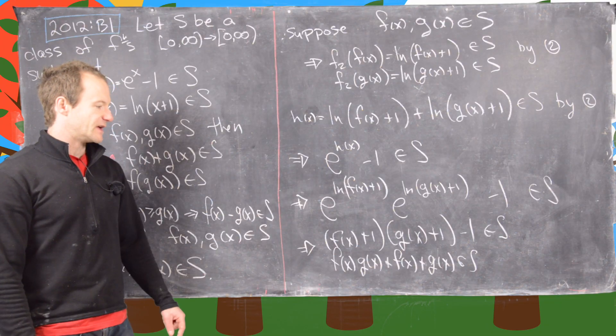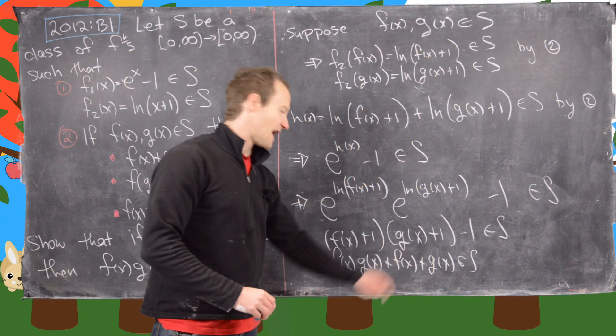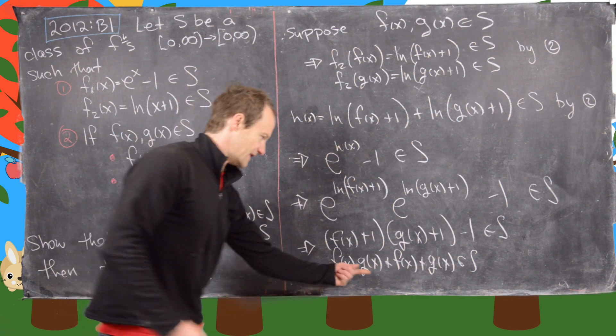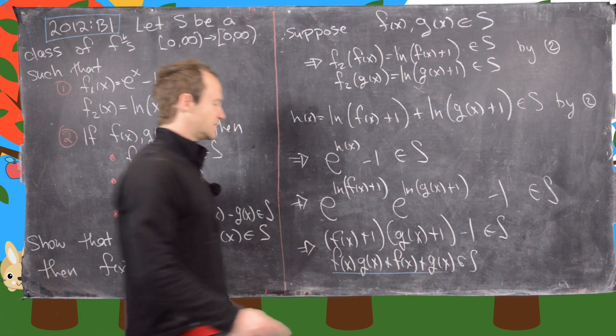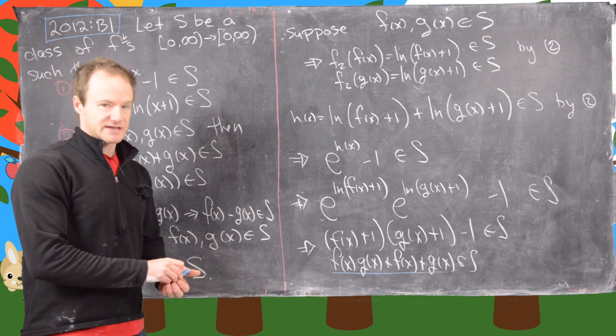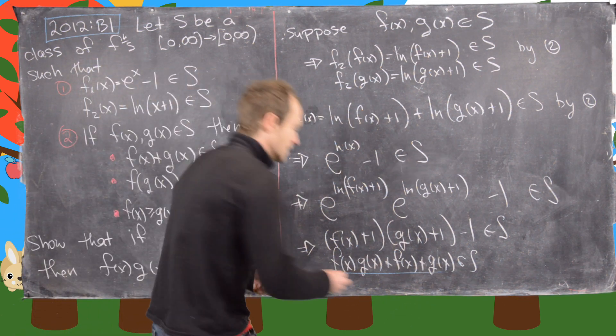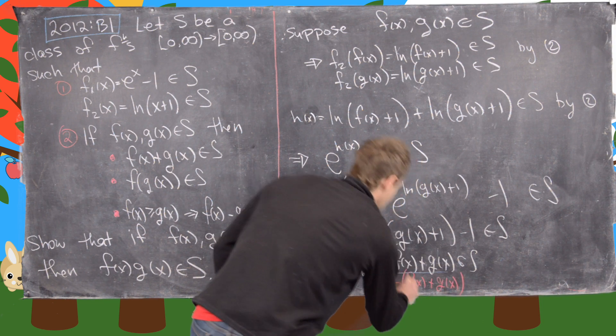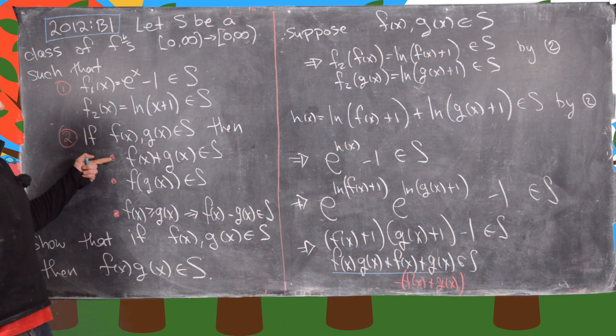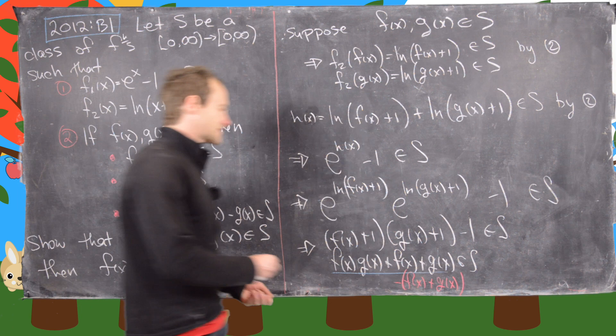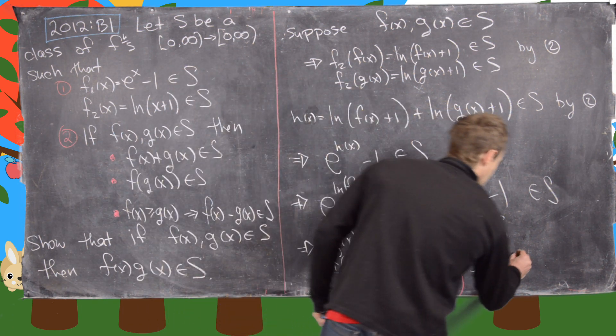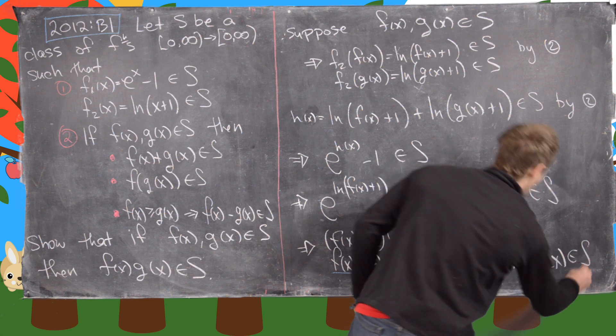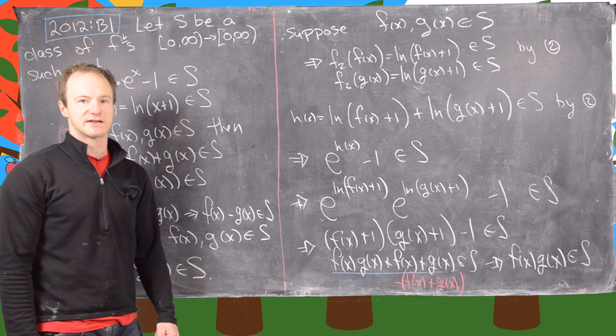Now finally what we can do is we can subtract f of x plus g of x from this. And notice that this function right here is most definitely bigger than the sum of f of x plus g of x. So we can subtract f of x plus g of x, which we know is in S by this part right here. And that's going to give us f of x times g of x in S because we just subtracted two things from S.